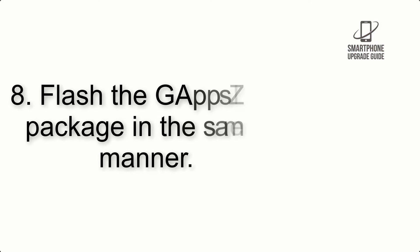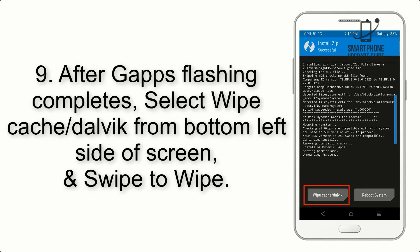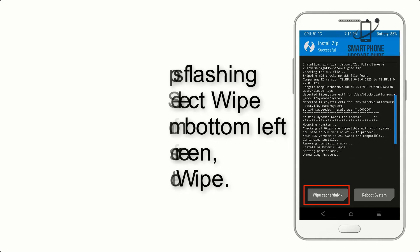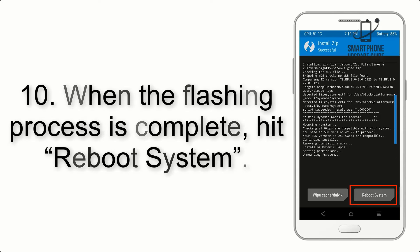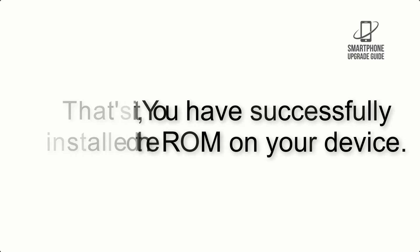Step 8: Flash the GApps zip package in the same manner. Step 9: After GApps flashing completes, select Wipe Cache and Dalvik from the bottom left side of the screen and swipe to wipe. Step 10: When the flashing process is complete, hit Reboot System. That's it — you have successfully installed the ROM on your device.